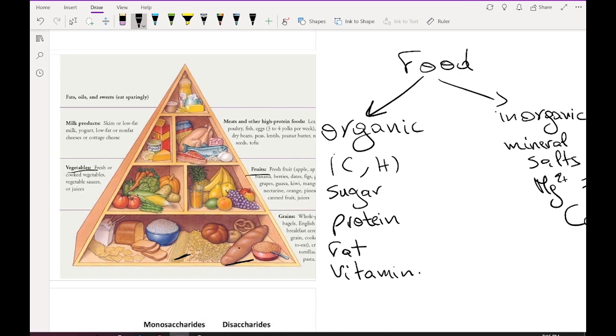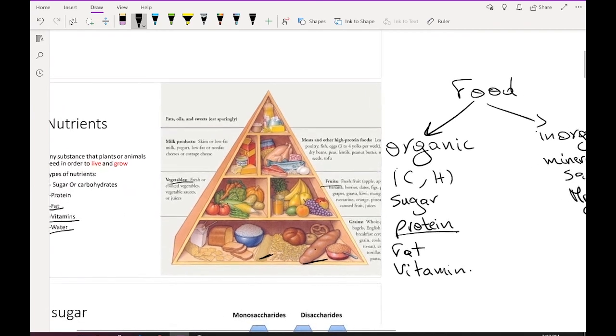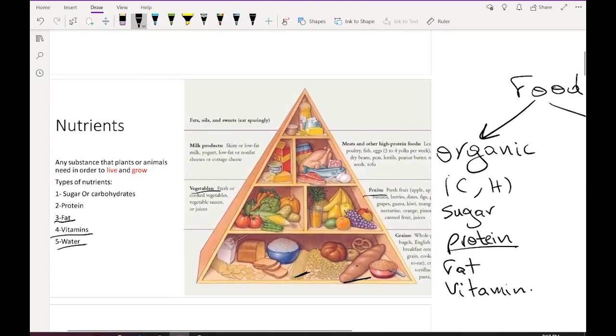Protein is found mainly in meat, fish, chicken, and eggs. Fat is found in oil, milk, and cheese. Vitamins are mainly found in vegetables and fruit. So these are the basic types of nutrients.